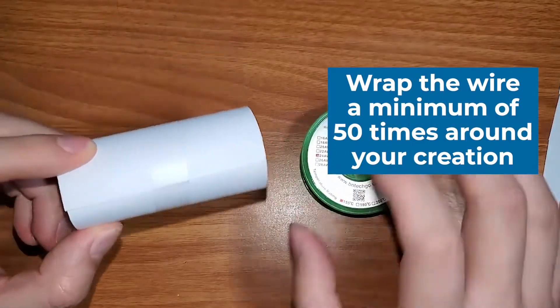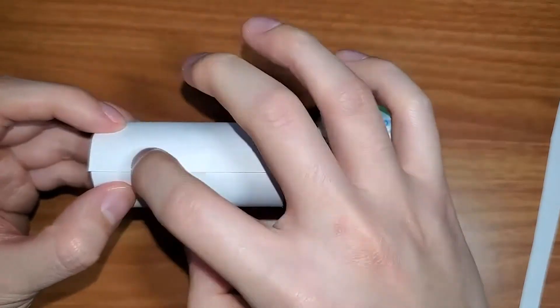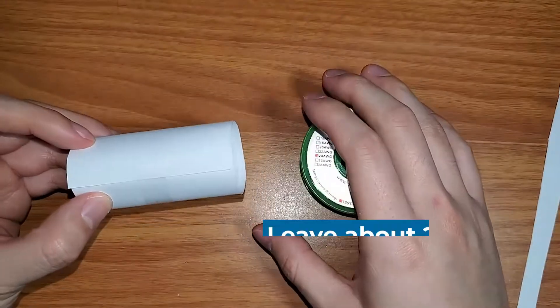What we want to keep in mind though is that we have our magnets seen here at the bottom. We're going to be wrapping it here and we want to make sure that the ends are going to be sticking out maybe two or three inches.